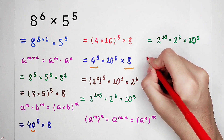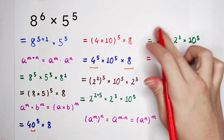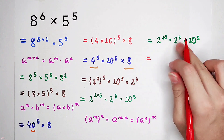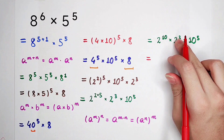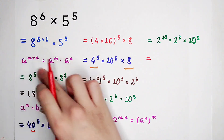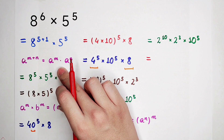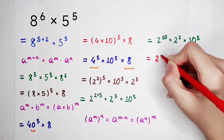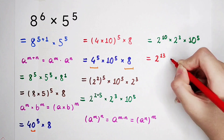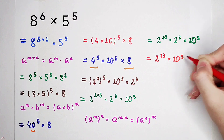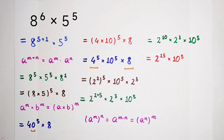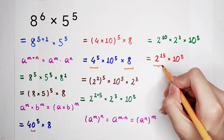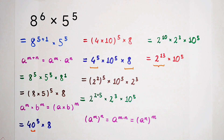Now, 2 to the power of 10 times 2 to the power of 3 — they have the same base but different exponents. So according to this formula, 2 to the power of 10 times 2 to the power of 3 is 2 to the power of 10 plus 3, which is 2 to the power of 13, times 10 to the power of 5. We know 10 to the power of 5 is 100,000. So we only have to calculate 2 to the power of 13. Note that 2 to the power of 12 is 4,096.